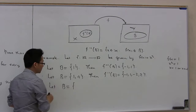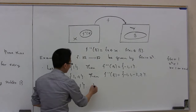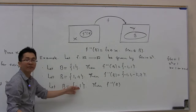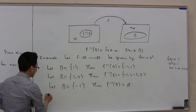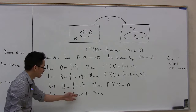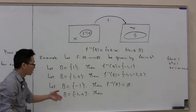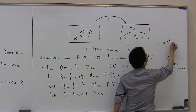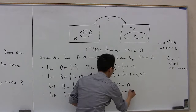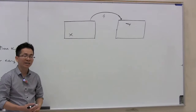In another example, let B be the set consisting of only the number -1. Then f inverse of B is the empty set, because you cannot find any x in the domain such that f of x equals -1. Finally, let B be the closed bounded interval from -2 to 4. Then f inverse of B consists of all x such that f of x is between -2 and 4. Solving this inequality, x is between -2 and 2, so f inverse of B is the interval [-2, 2].